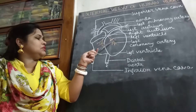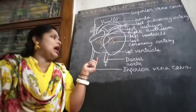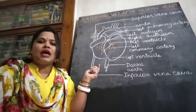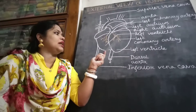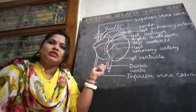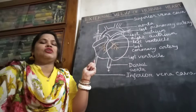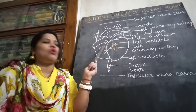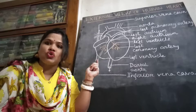The blood vessels that nourish the heart itself are known as coronary arteries. This one serves the left hand side of the heart, so it is the left coronary artery; this one is on the right hand side, so it is the right coronary artery. I have marked them in orange.